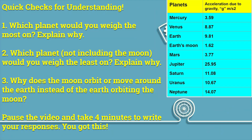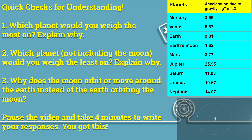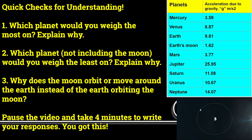Quick check for understanding. Number one: which planet would you weigh the most on? Explain why. Number two: which planet, not including the moon, would you weigh the least on? Explain why. Number three: why does the moon orbit or move around the Earth instead of the Earth orbiting the moon? Pause the video and take four minutes to write your responses. You got this.